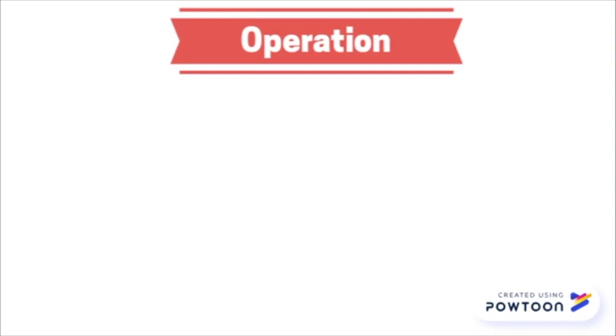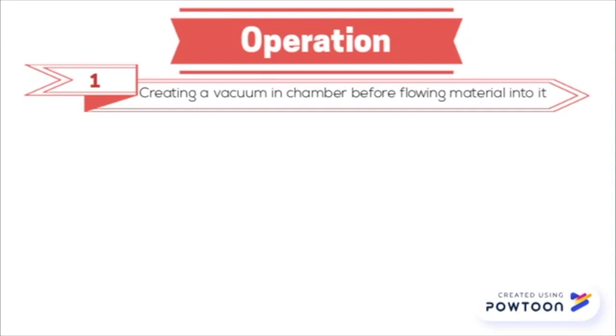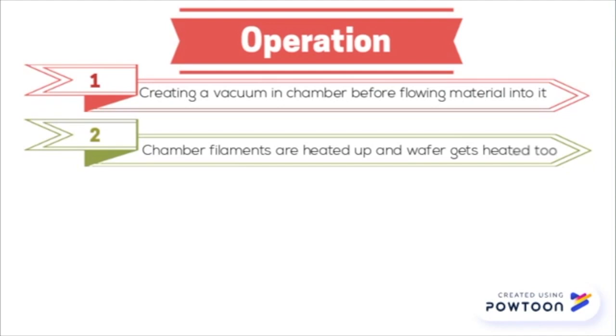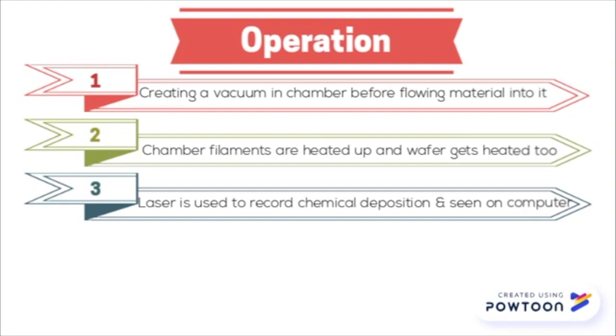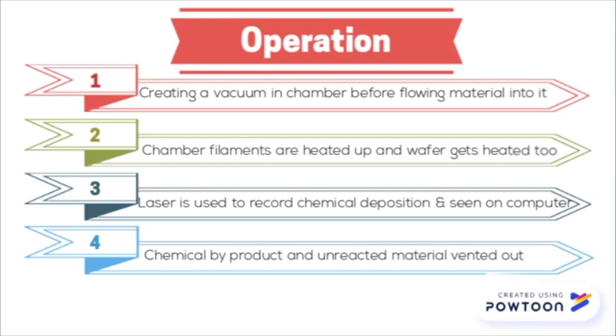The CVD technique is the method used to create thin films on substrates. It starts by creating a vacuum in the chamber before flowing the material into it. In this case material is flowing in our hexylacrylate and TBPO. The chamber filaments are heated up and the wafer inside gets heated as well. A chemical reaction occurs near the hot surface of the wafer which produces a thin film on that wafer. A laser is used to record the chemical deposition and it is seen on the computer's program as sinusoidal waves. The chemical byproduct and unreacted material get vented out of the chamber before it is opened for cleaning before the next sample runs.